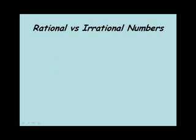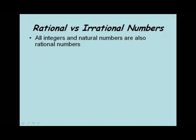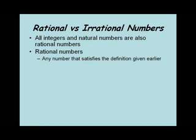Let's look at the rational and the irrational numbers — how do we classify these? All integers and natural numbers are also rational numbers; we saw that in the Venn diagram. If we look at rational numbers that aren't integers or natural numbers, any number that satisfies the definition we gave earlier is a rational number — numbers like one-half, three-fourths, seven-thirds. Those are written in the form A divided by B with A and B integers and B not equal to zero.